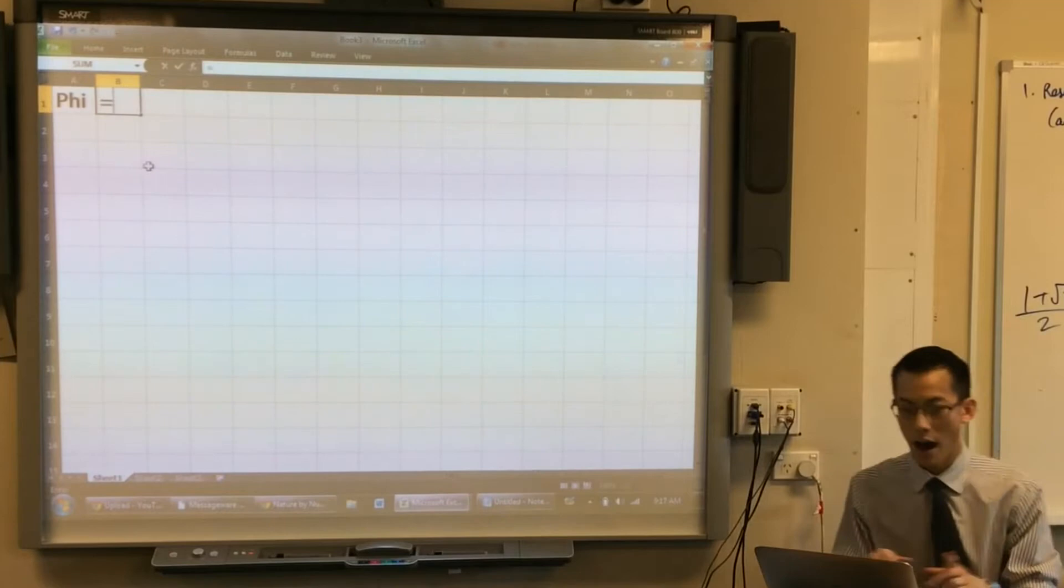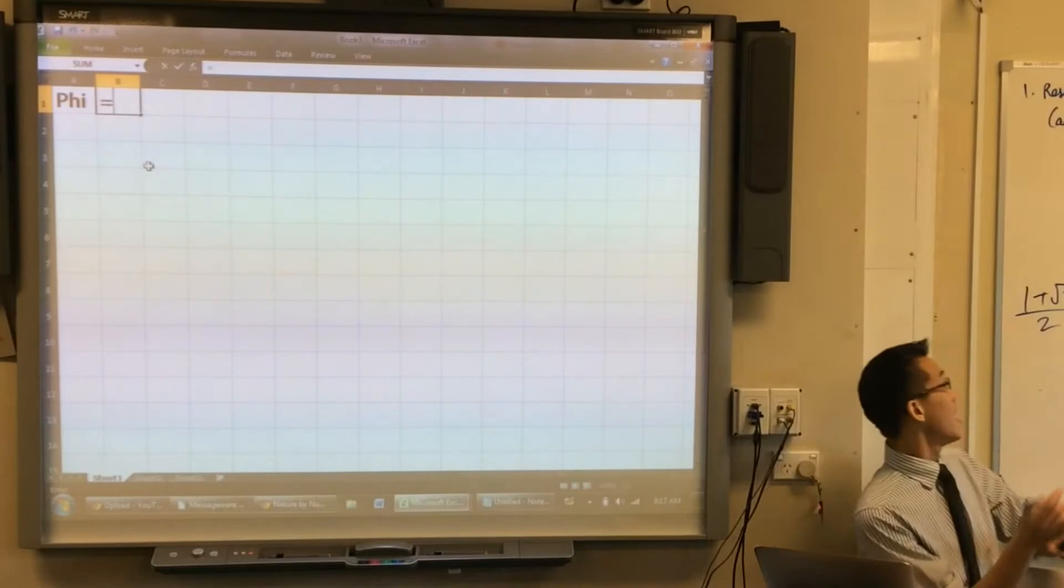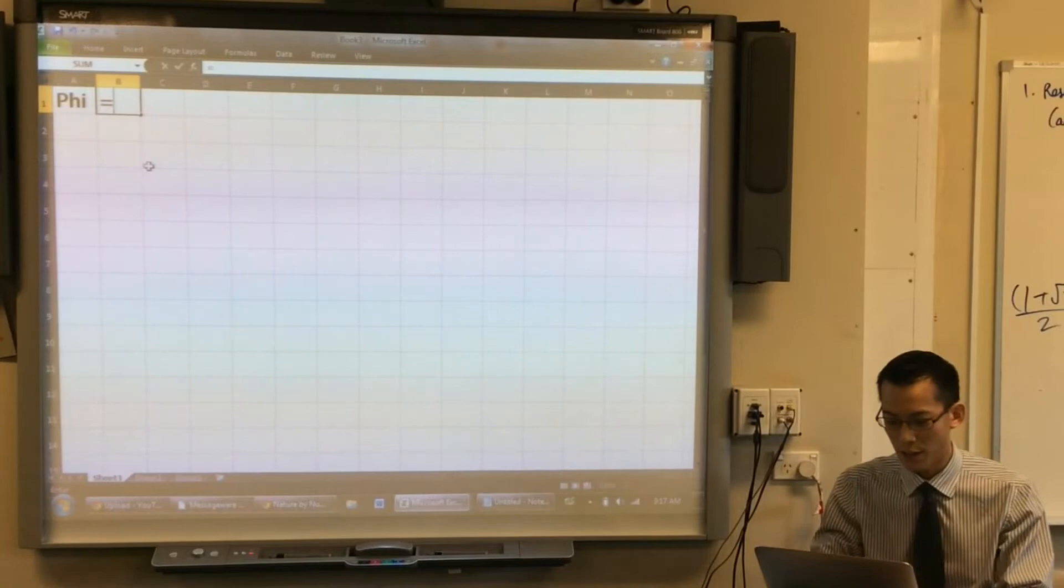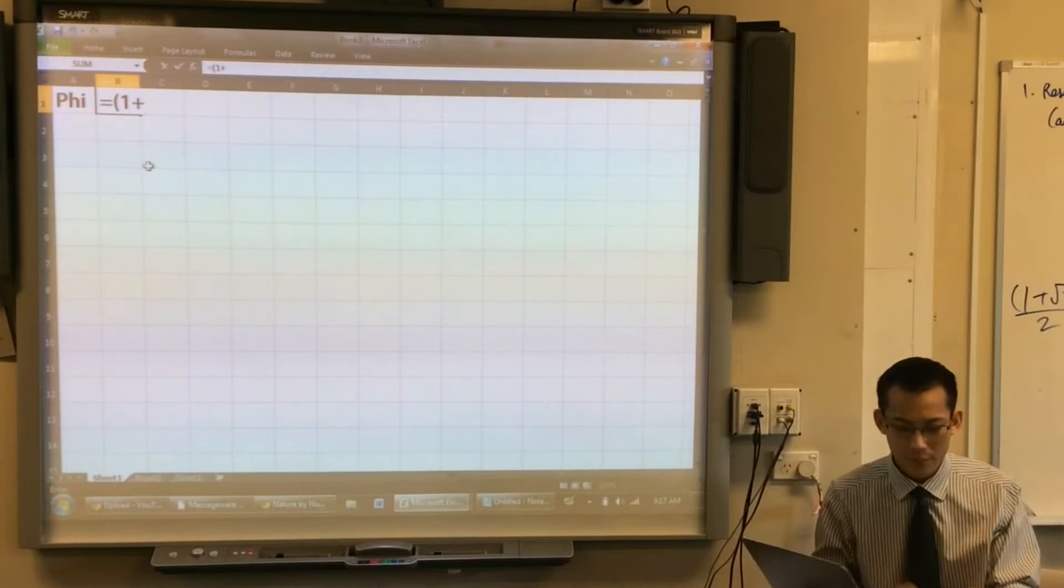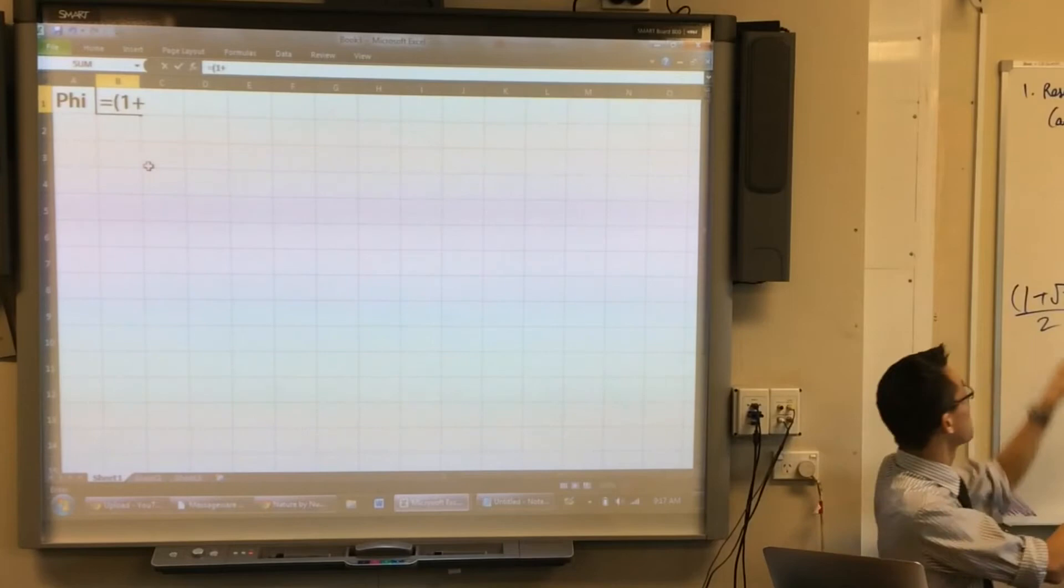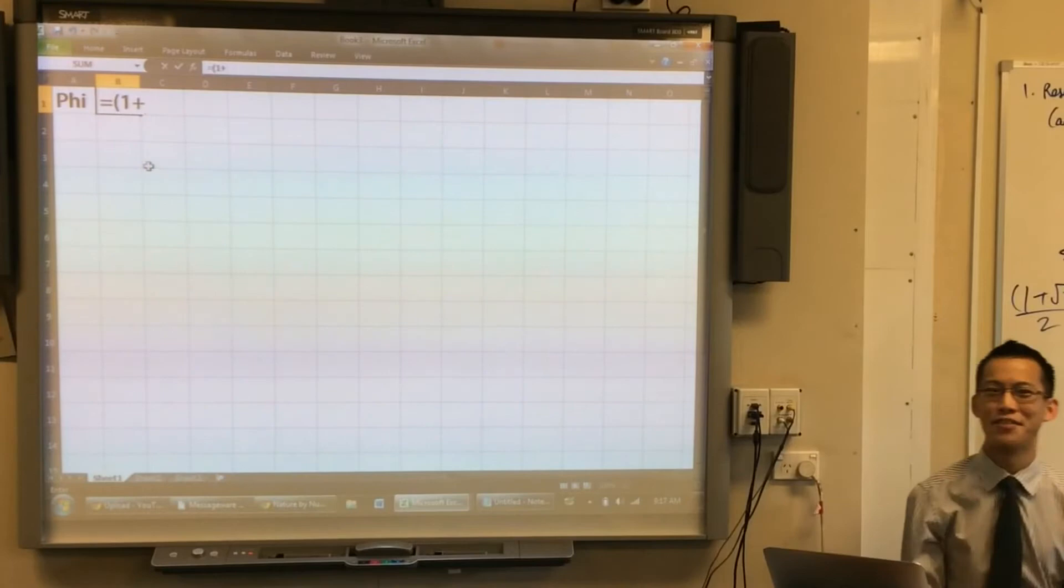Unfortunately, one of the disadvantages of Excel is that it doesn't deal nicely with surd notation, but it will give us the numbers. So I want to input this into Excel. Because it's a fraction and I want to divide this whole numerator by 2, we're going to start with some brackets. After your equal sign, you slap in a bracket, you say 1 plus.